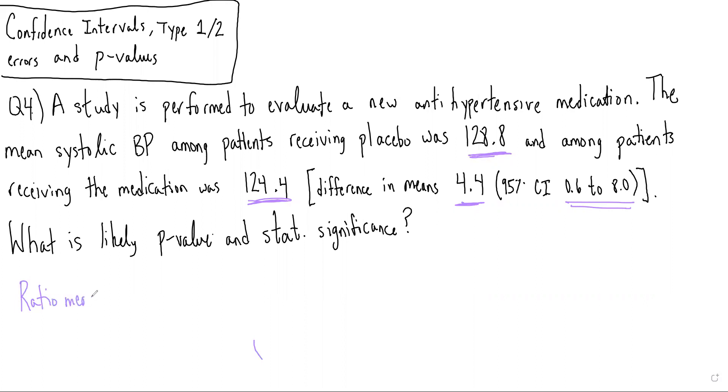In ratio measures like an odds ratio or relative risk, the null hypothesis is 1, because we're doing x over y.